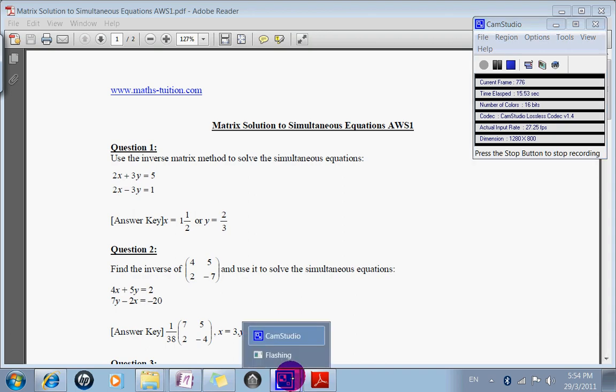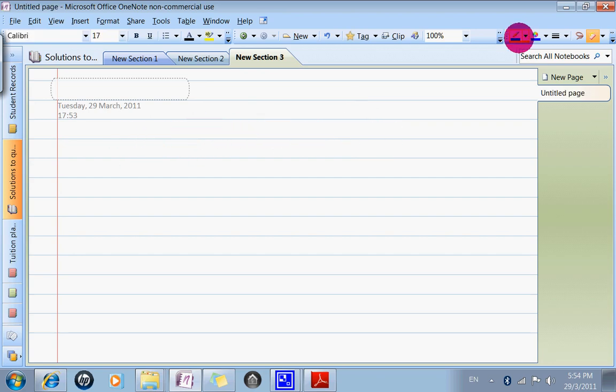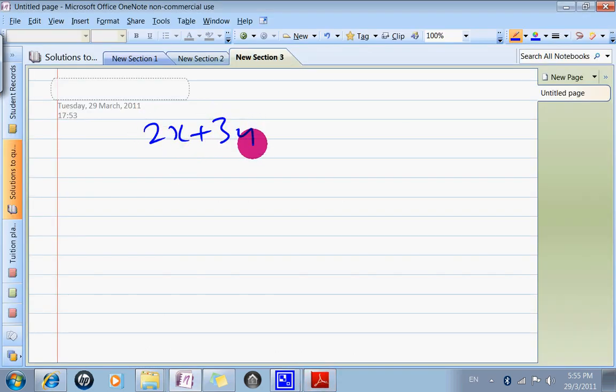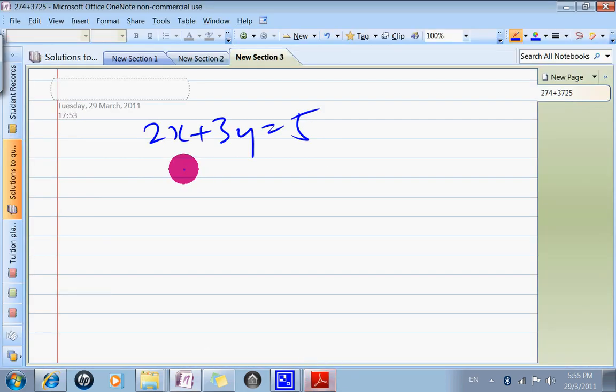First of all, let's write down the equation. 2x plus 3y equals 5, and 2x minus 3y equals 2.